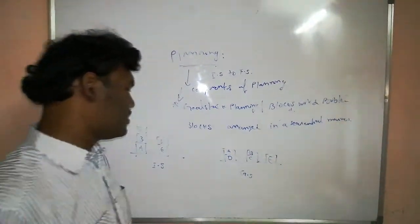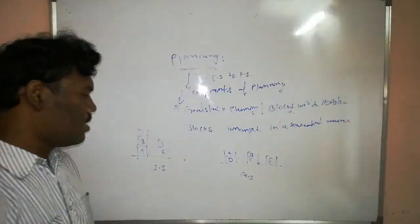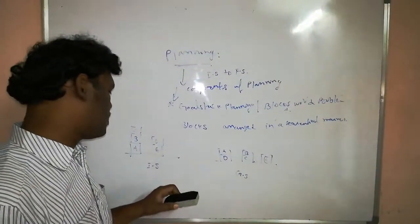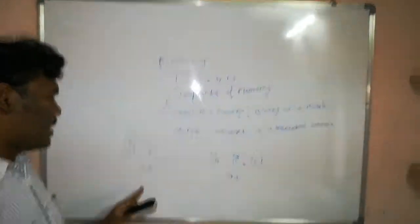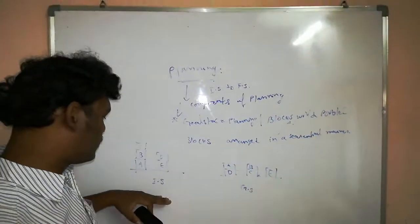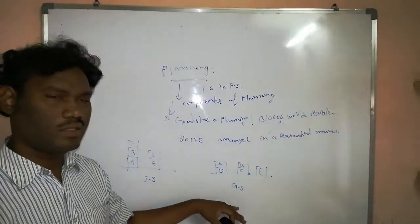For example this is my goal. Then how I can arrange from the initial step to the goal step? By arranging these blocks from this step to this step.